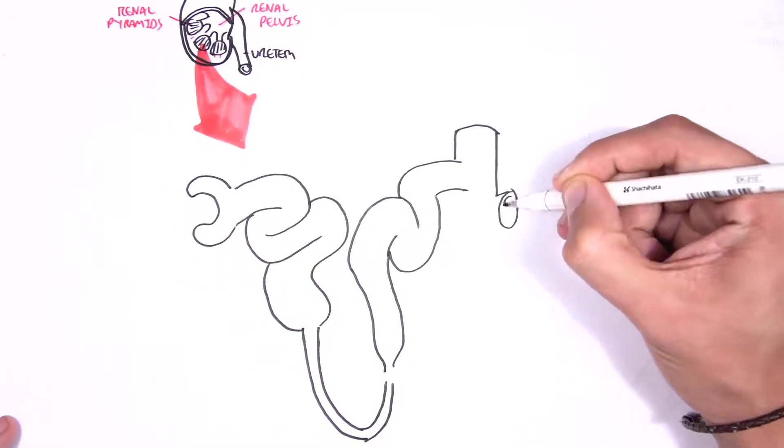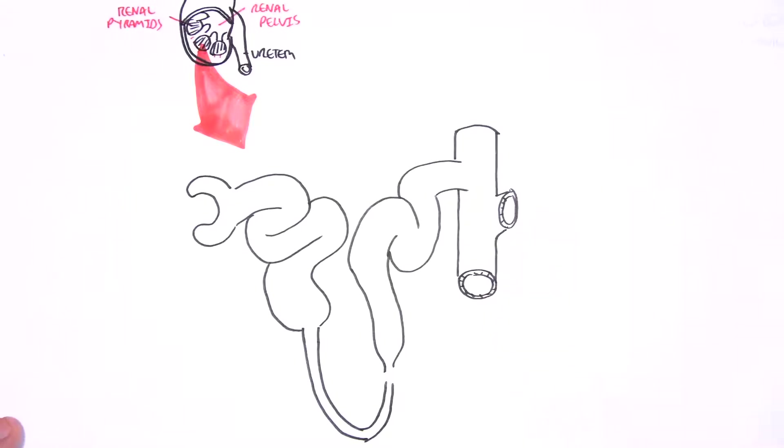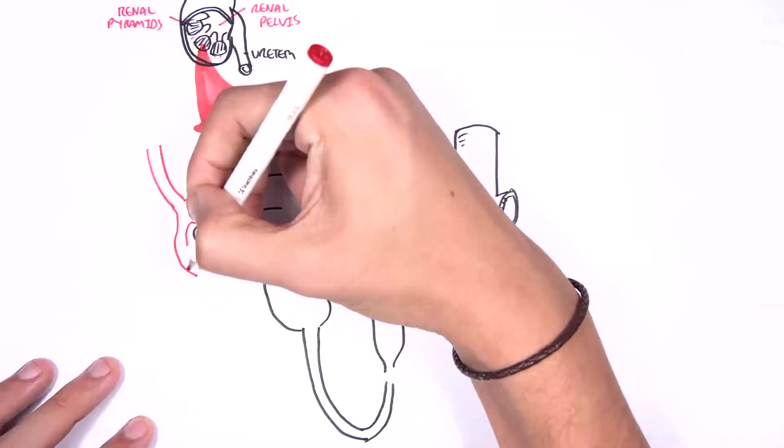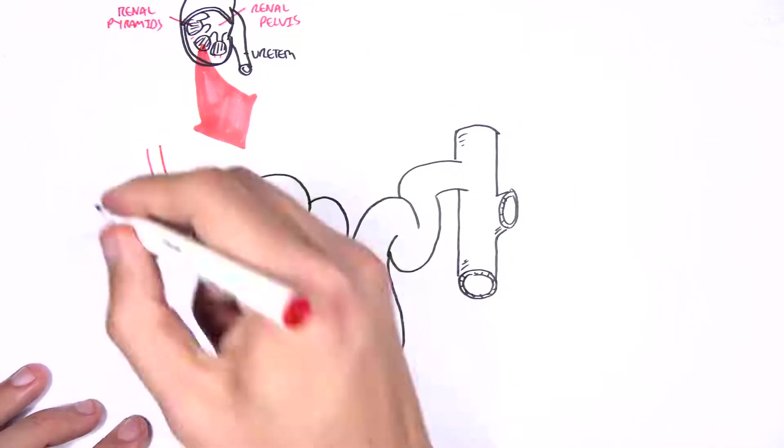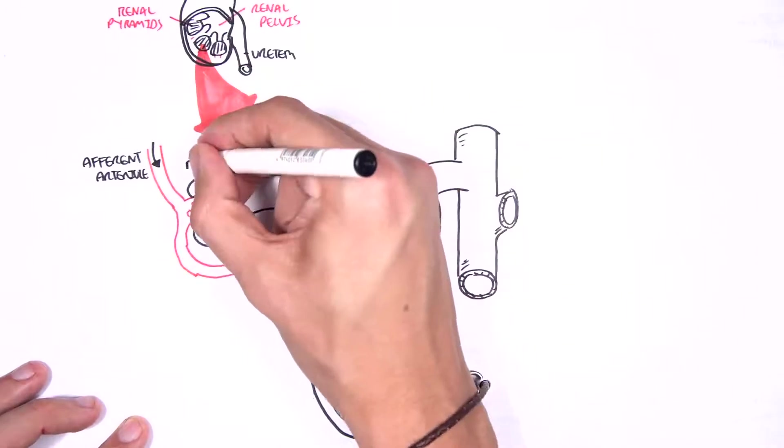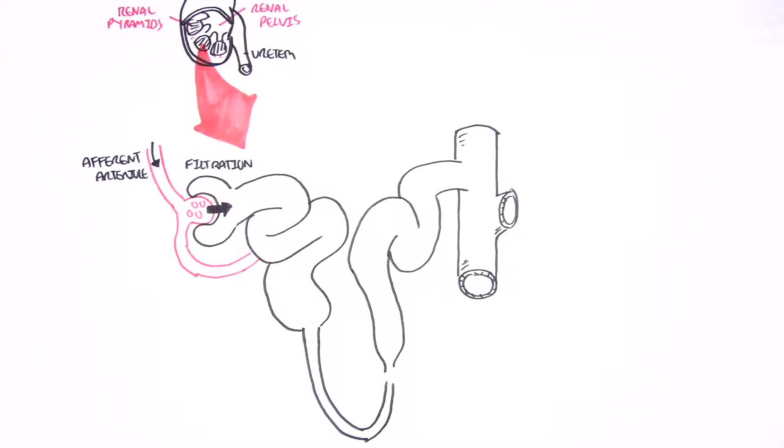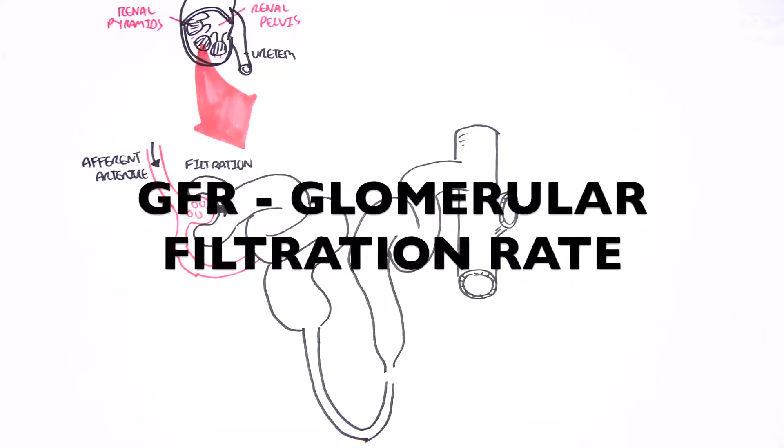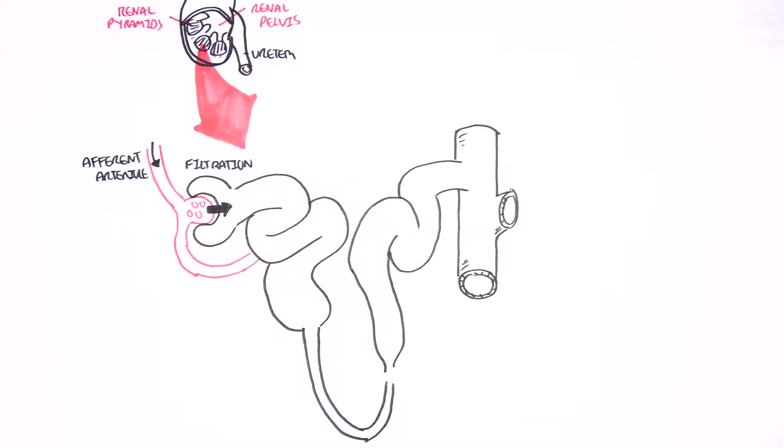In summary, an afferent arteriole carries blood from the renal artery. This afferent arteriole will come down and be filtered in the glomerulus, and this occurs in the Bowman's capsule, the head of the nephron. A term to know is the glomerular filtration rate, or GFR, which is literally the rate at which the glomerulus filters the blood. When blood is filtered, filtrate is produced and this goes through the nephron. The remaining blood will leave the glomerulus and exit out through the efferent arteriole.